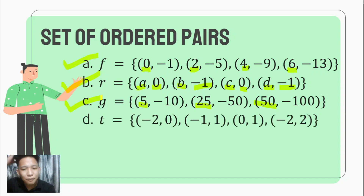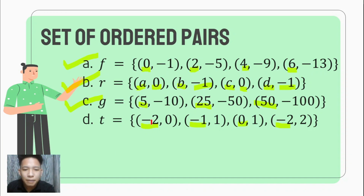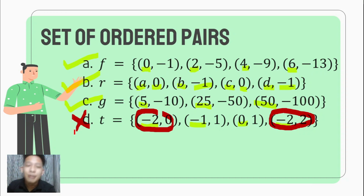And lastly, if we have (-2, 0), (-1, 1), (0, 1), and (-2, 2), you notice that there are two ordered pairs with the same first element — both have -2 as the first element. Hence, this set of ordered pairs does not represent a function.